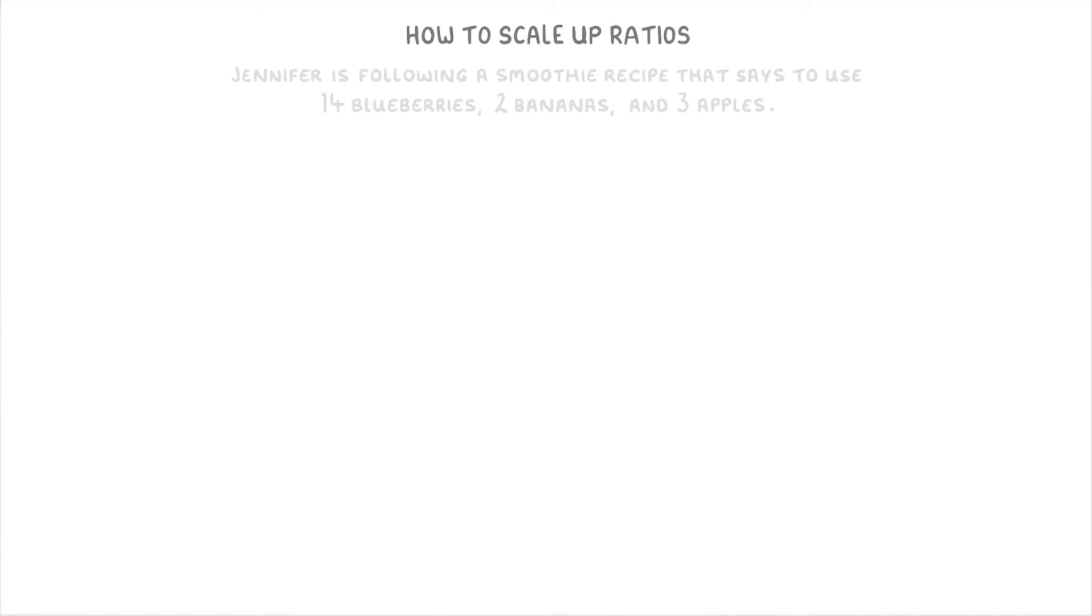Before we finish, let's try one slightly different question. Jennifer is following a smoothie recipe that says to use 14 blueberries, 2 bananas, and 3 apples. If she wanted to use 6 bananas instead, how many blueberries and apples should she use?